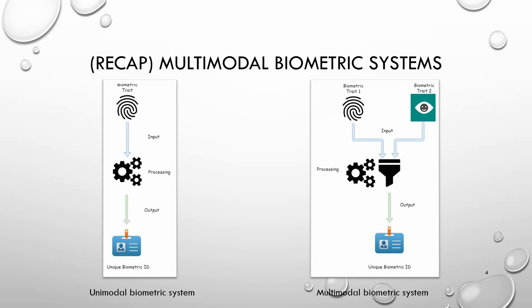Here's a pictorial juxtaposition of the two discussed modes of biometric authentication. On the left, we have a biometric system taking one biometric trait which is processed to ultimately create a unique biometric ID, and on the right we have a biometric system taking more than one — in this case two — biometric traits to create a unique biometric ID.